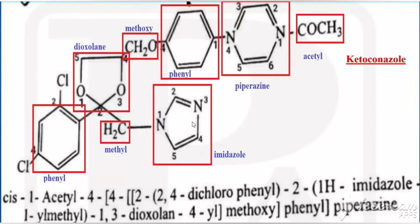The heterocyclic rings present in ketoconazole are: one is piperazine, another one is imidazole, and the last one is 1,3-dioxolane. Now we will see the synthesis.